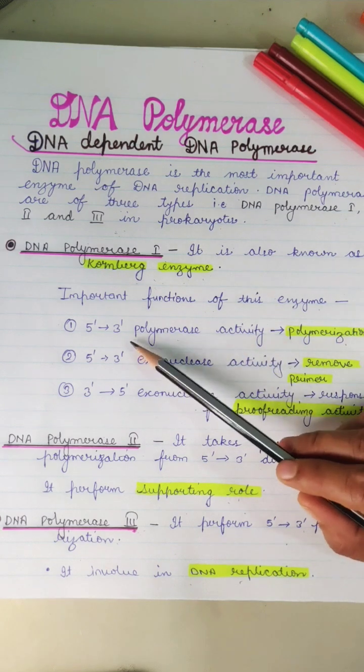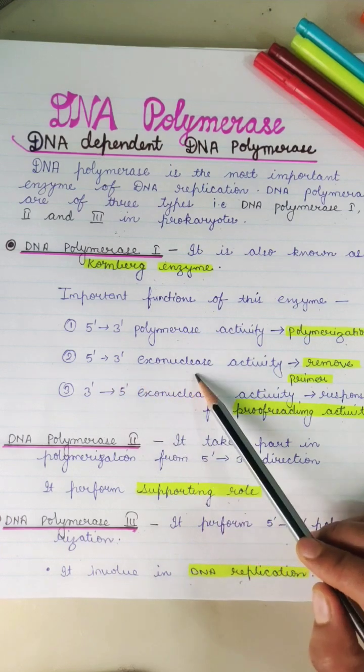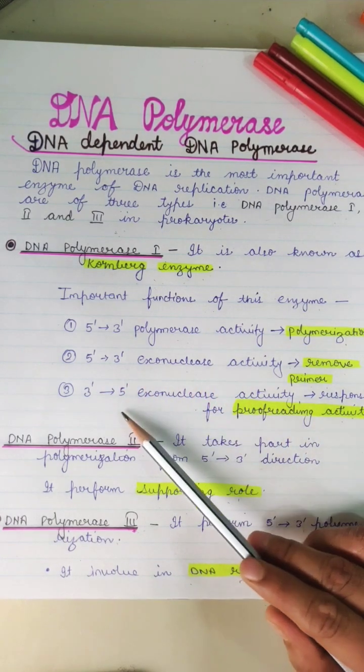First is polymerization, done by 5' to 3' polymerase. Next is removing primers, done by 5' to 3' exonuclease. Last is proofreading activity, done by 3' to 5' exonuclease.